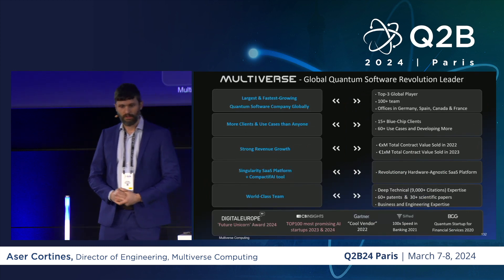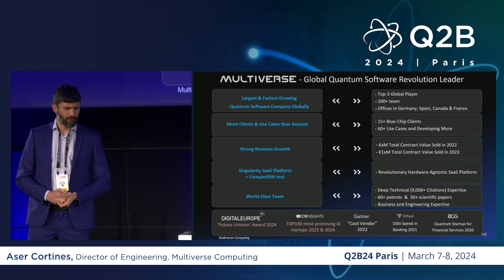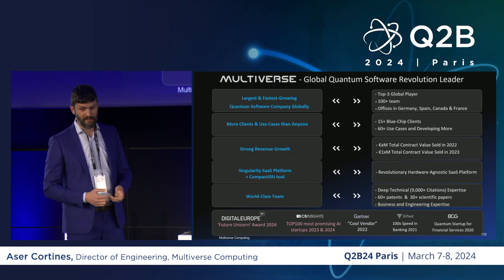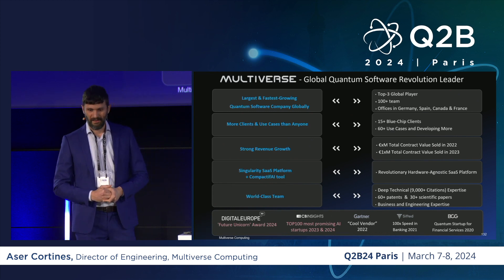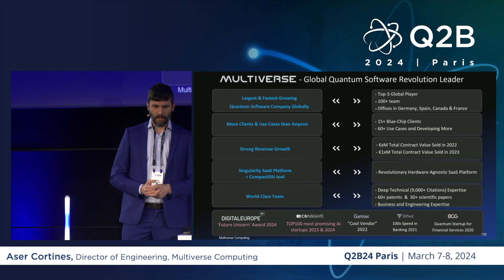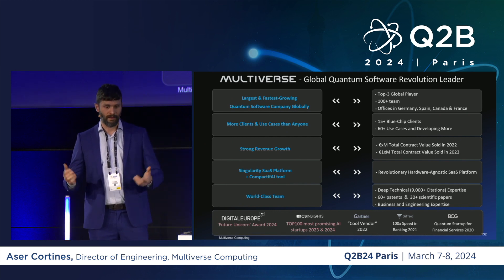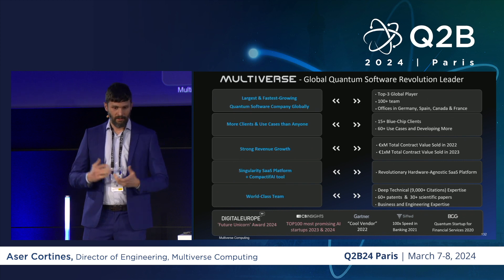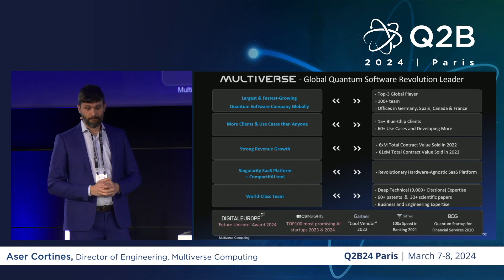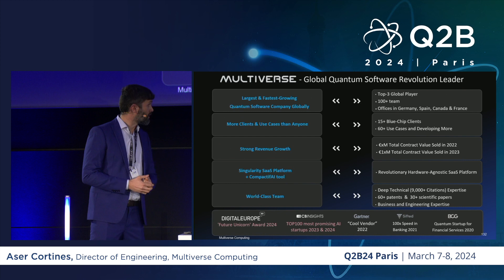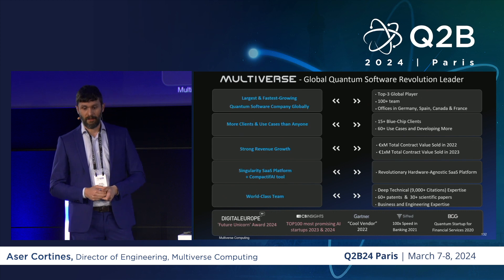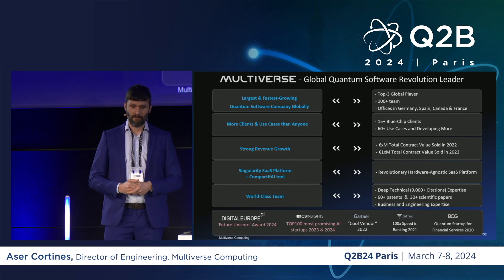Some figures about Multiverse: we are a fast-growing company. Today we are 120 people working across six offices, with the main headquarters in Spain. We have a small office here in Paris and also a big office in Canada. We have more than 60 use cases developed with more than 15 blue-chip clients, working on real industrial use cases with relevance to industry. In 2023, we had more than approximately $10 million of contracted values sold, so we have solid revenue growth.